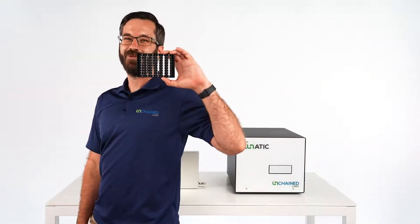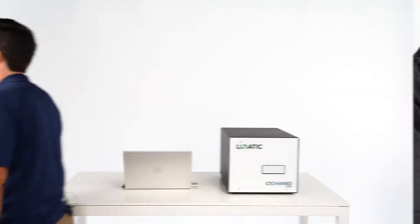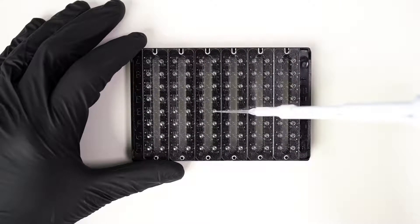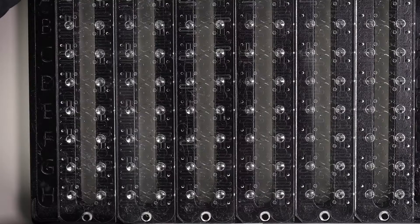Let's load up a plate and check out how a measurement works on Lunatic. Just pipette two microliters of sample into the input wells and you're done. Pretty easy.